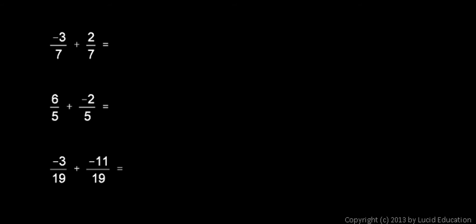Here are some examples. If I have negative 3 sevenths plus 2 sevenths, I can just add the negative 3 and the 2. And negative 3 and 2 add up to negative 1, so negative 3 sevenths plus 2 sevenths is negative 1 seventh.